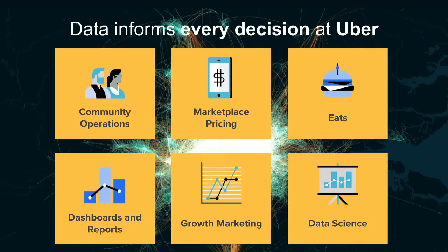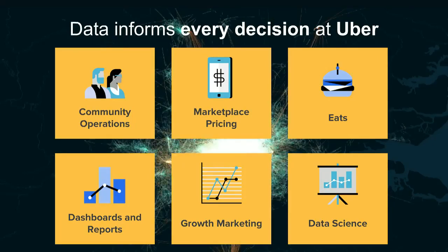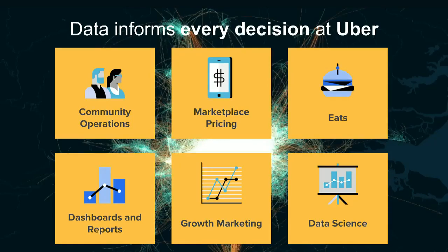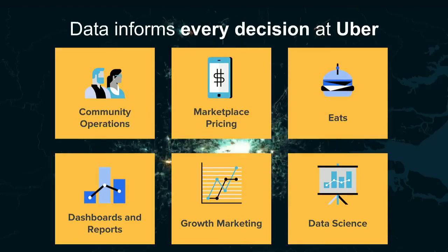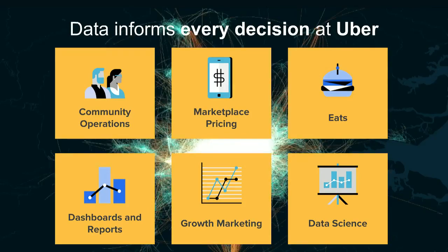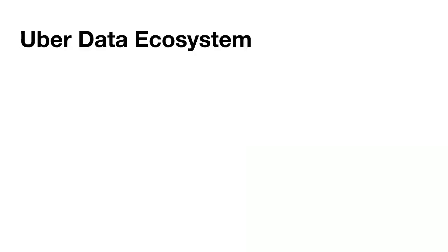Just to give you some quick numbers, we have over 5,000 weekly actives — people who run queries at least once a week to do some critical business role or problem-solving in their day-to-day operations. So next, let's see how Vertica fits into the Uber data ecosystem.